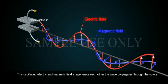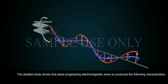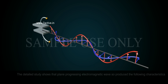This oscillating electric and magnetic field regenerate each other. The wave propagates through space. The frequency of electromagnetic wave is equal to frequency of oscillation of the charge. The detailed study shows that plane progressive electromagnetic wave so produced has the following characteristics: